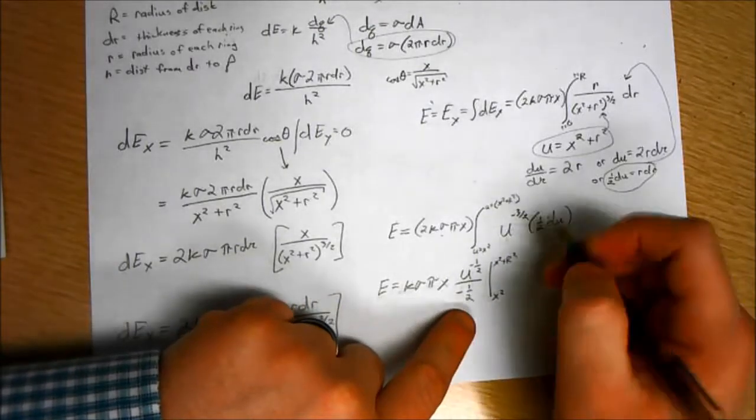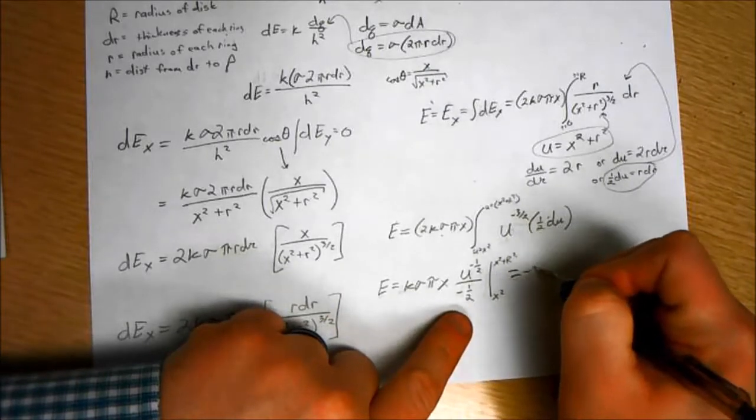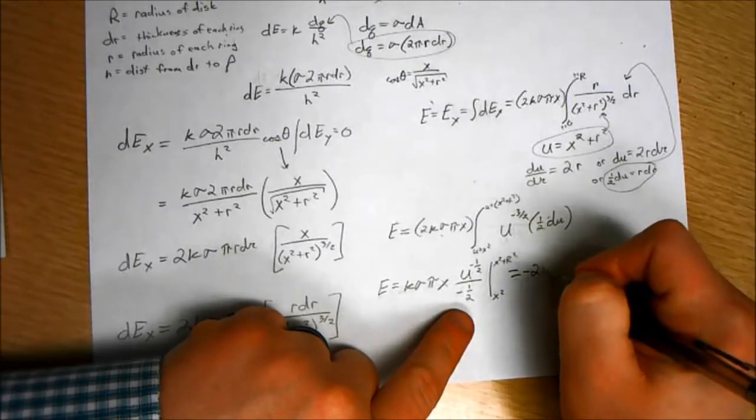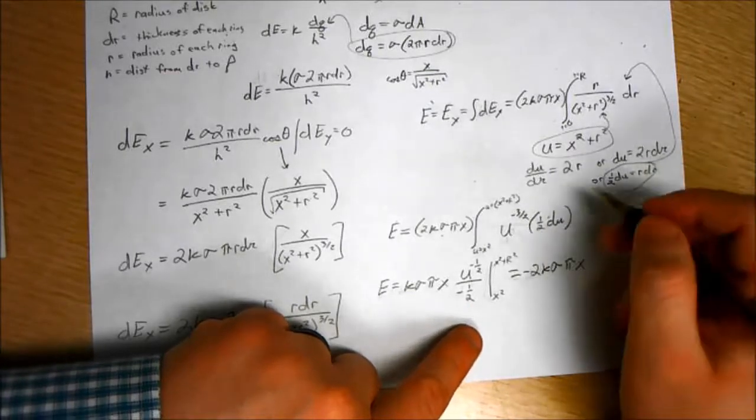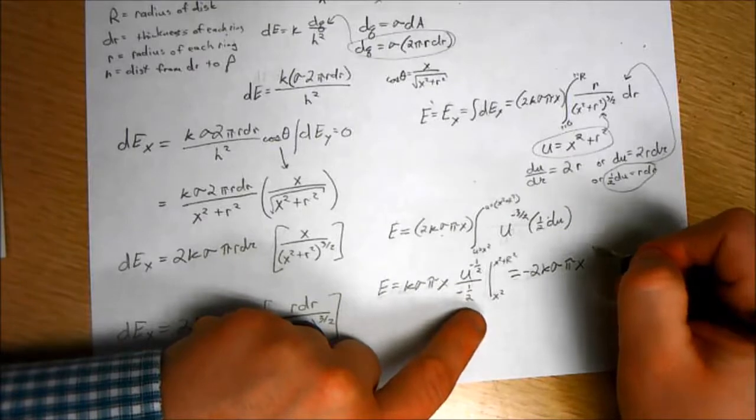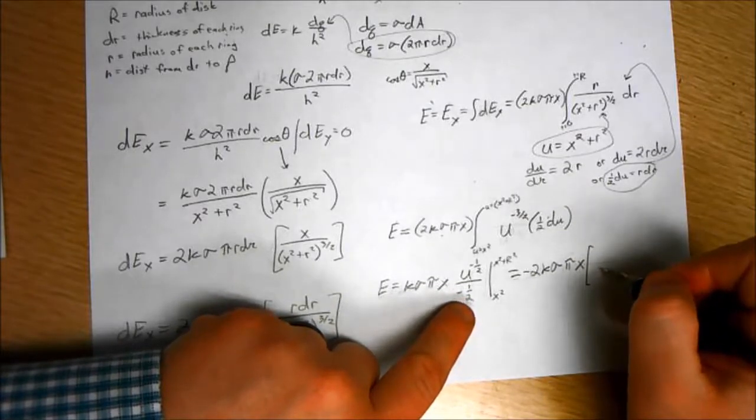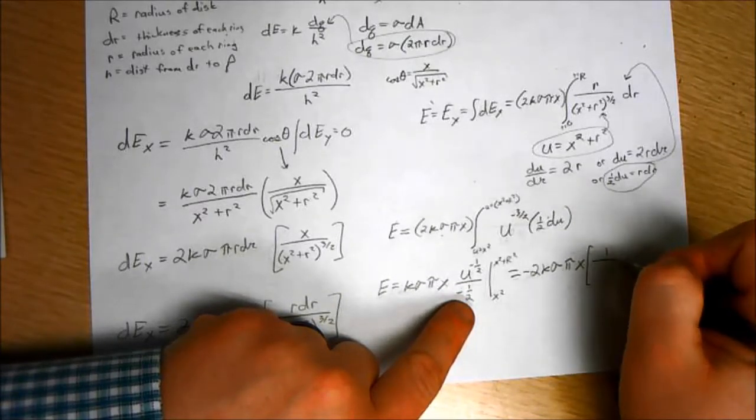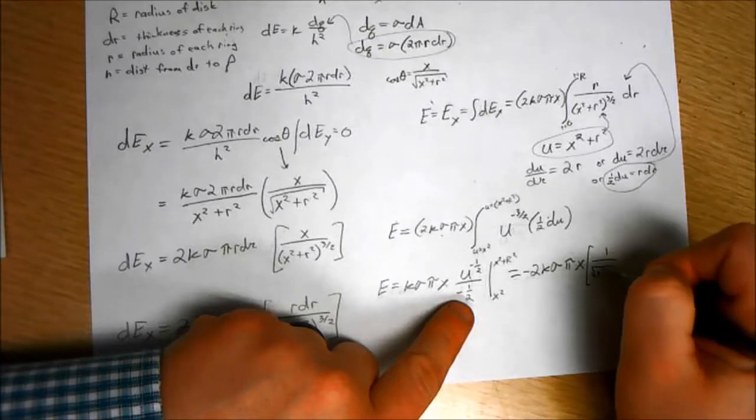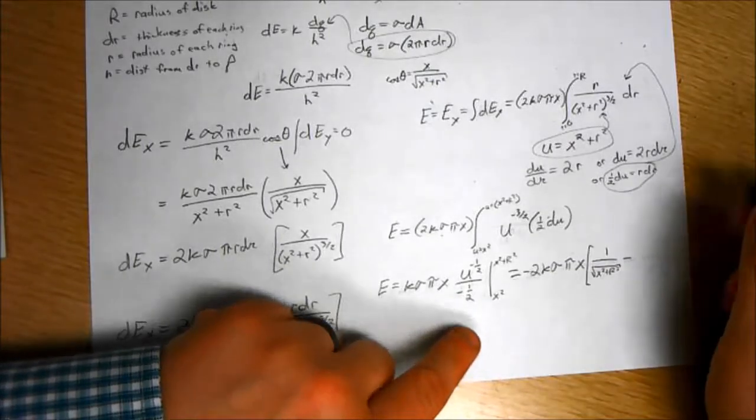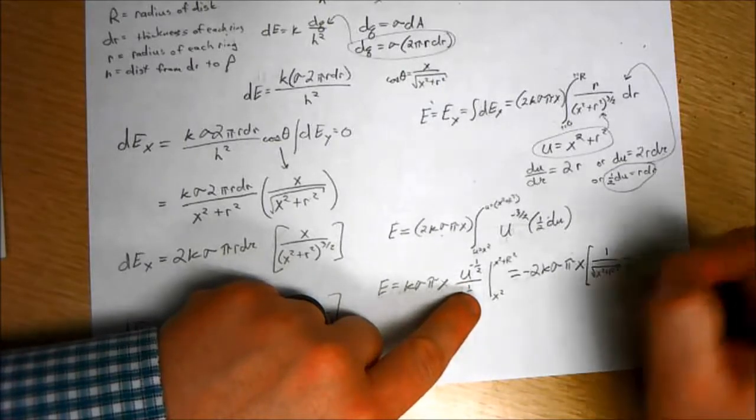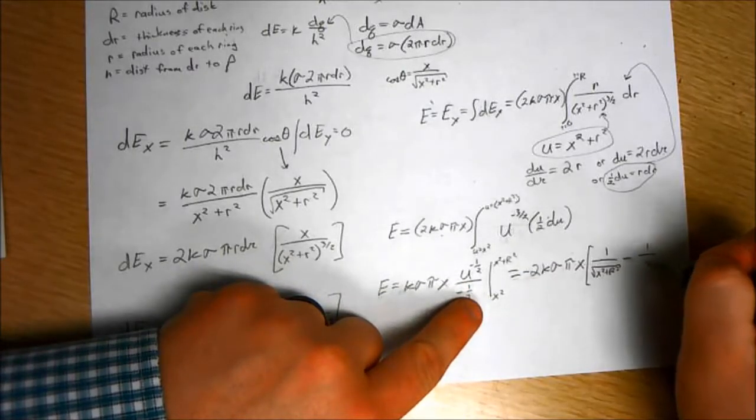Now, negative 1 half in the denominator is the same as a negative 2K sigma pi X. And, now we have U to the negative 1 half. That's 1 over square root of U. So, that's 1 over the square root of X squared plus R squared minus 1 over the square root of X squared. So, that's just 1 over X.